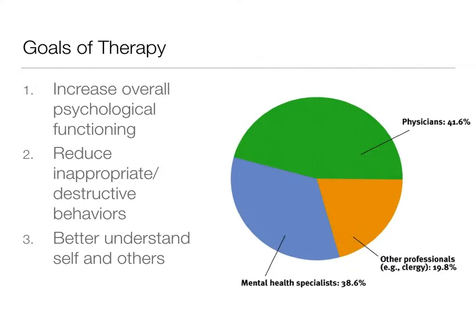About 41% of therapies for psychological disorders are administered by physicians, including psychiatrists and general practitioners. About 38% are done by mental health specialists — clinical psychologists, counseling psychologists, and social workers. And about 20% are provided by other professionals, including clergy and religious leaders.